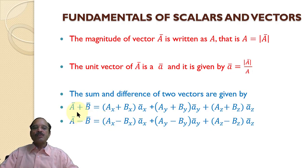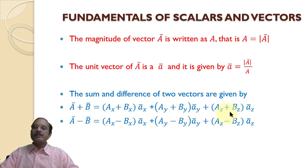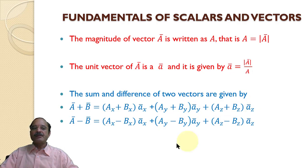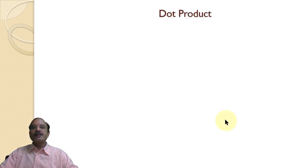For example, if I want to add two vectors, vector a plus vector b, I add the x components together, the y components of a and b together, and the z components of a and b together, and assign them the directions āx, āy, and āz. In the same manner, we can carry out the difference between two vectors by taking subtraction of the corresponding x, y, and z components.